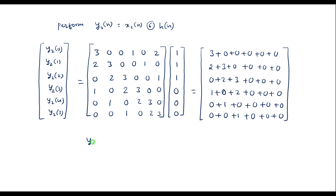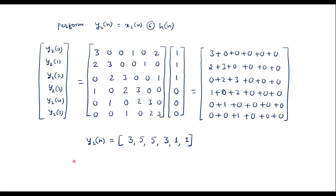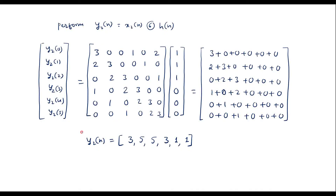Therefore y2[n] equals {3, 5, 5, 3, 1, 1}. This is the y2[n] sequence.